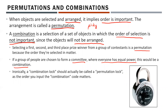Another example: in class group projects, if I randomly grouped you in groups of three, order doesn't matter — you're all in the same group, no one is in a different position than someone else. With some irony, a combination lock should technically be called a permutation lock, because the order you input your combination actually matters. If your combination was 35, 20, you'd have to put it in that order — it's not the same as 20, 35.